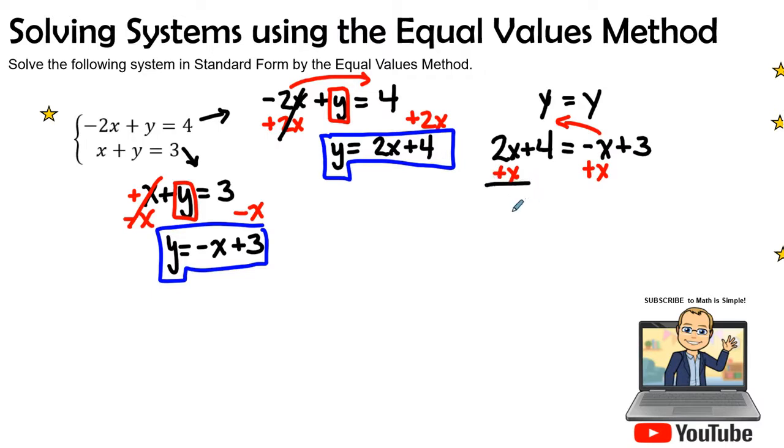Therefore, we have 3x plus 4 is equal to, these 2x and negative x becomes zero, and I'm going to bring down my positive 3. I go ahead and subtract 4, because the constants need to go to the right side. I'm going to subtract 4, or add a negative 4 to both sides. Therefore, this becomes zero. Now I have 3x, and 3 minus 4 means that it's equal to a negative 1.